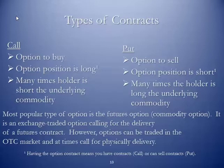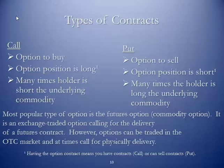On the flip side, we have the put option. This is an option to sell the underlying contracts. The option position here is short because they have the right to sell. Many times the holder is long the underlying commodity. For example, a crude oil producer may want the right to sell their crude, or to sell contracts in the financial marketplace at a predetermined price stated in their option. To the extent that they exercise, they have the right to sell. We consider their option position to be short because their physical commodity position is, in fact, long. The most popular type of option is the futures option or the commodity option — an exchange-traded option calling for the delivery of a futures contract. However, options can also be traded in the over-the-counter market and at times can call for physical delivery.